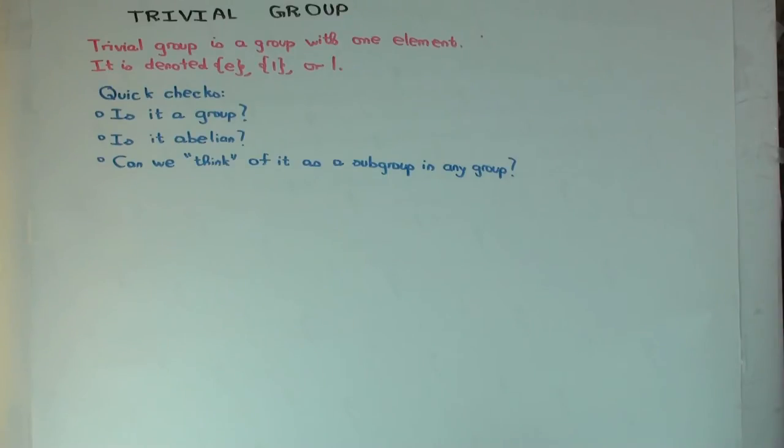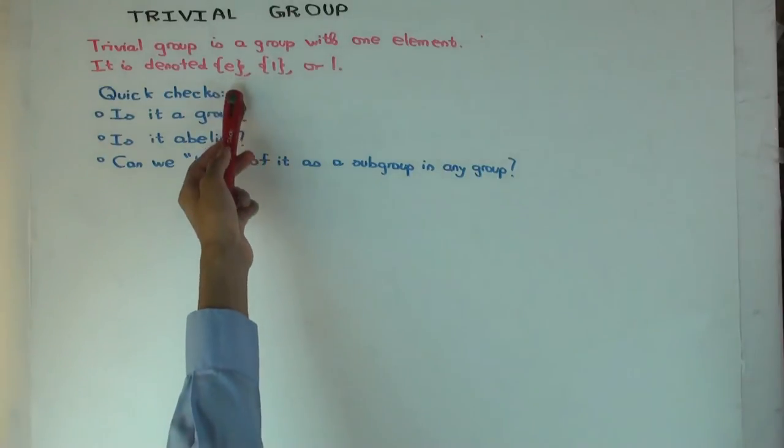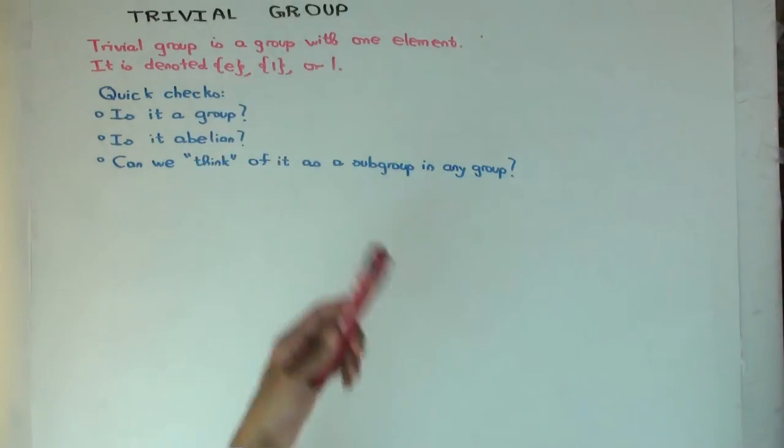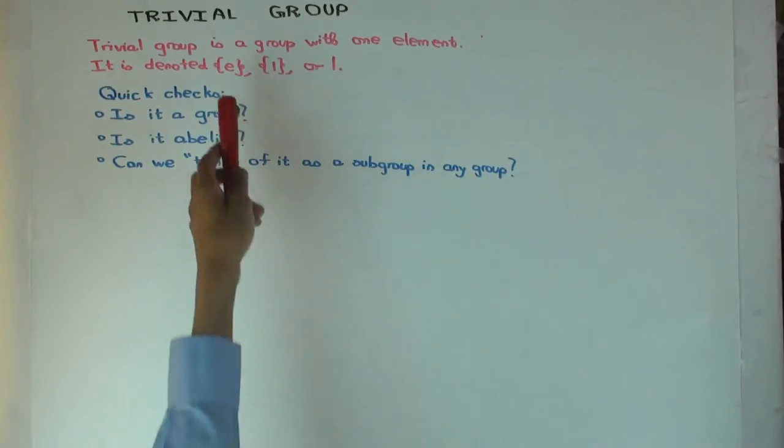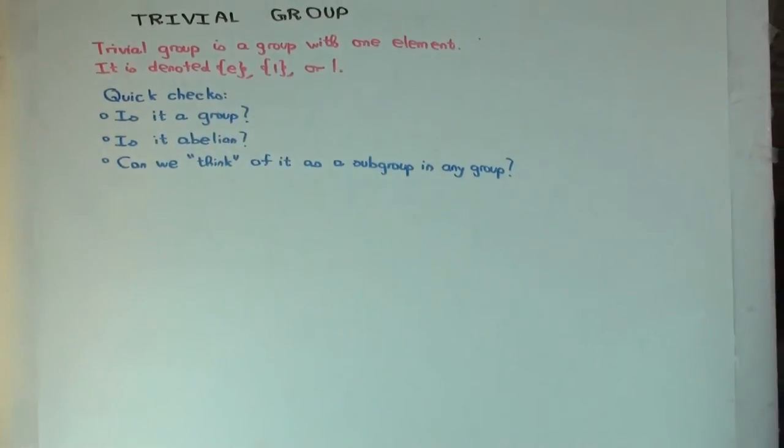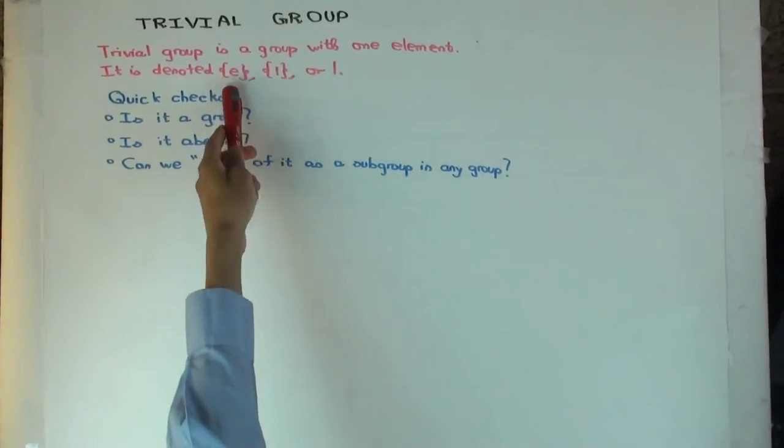There is an identity element, and that means it's not empty. So the smallest group you can have is with one element. And once you have a group with one element, there's only one way you can define the binary operation. If that element is e, then e star e is e.